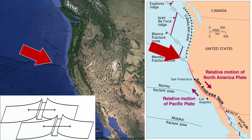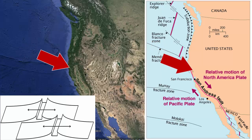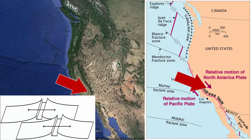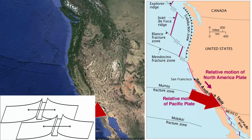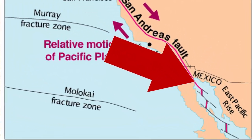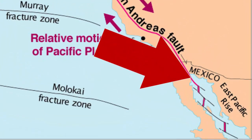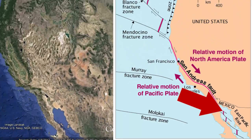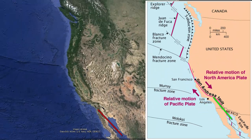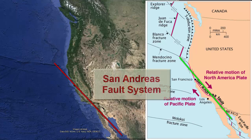Where? All the way south to the Sea of Cortez, where it connects with the seafloor spreading centers that are separating the Baja Peninsula from the rest of Mexico. This long transform boundary connecting these two sections of ocean ridge is known as the San Andreas Fault System.